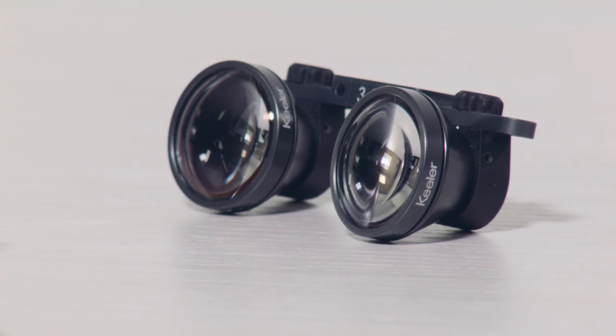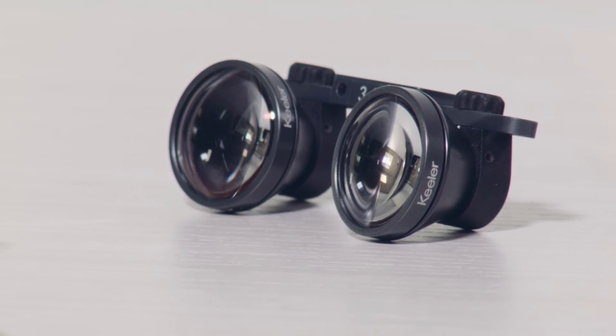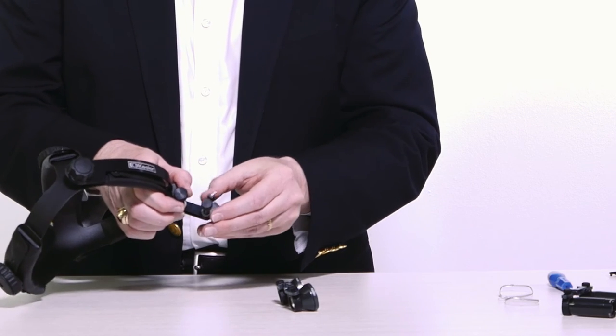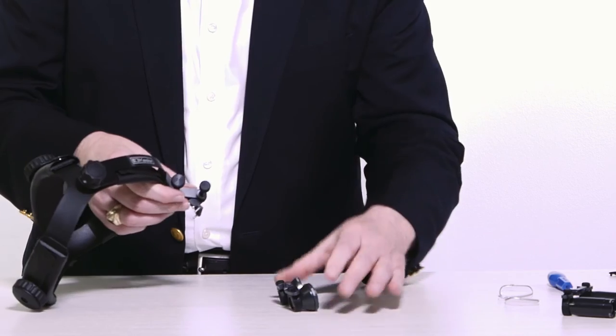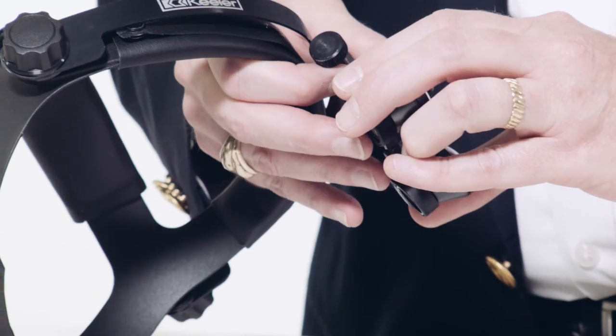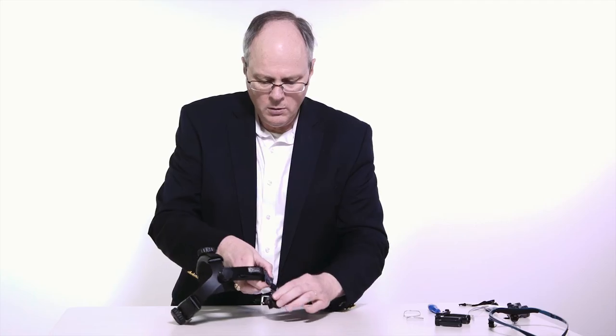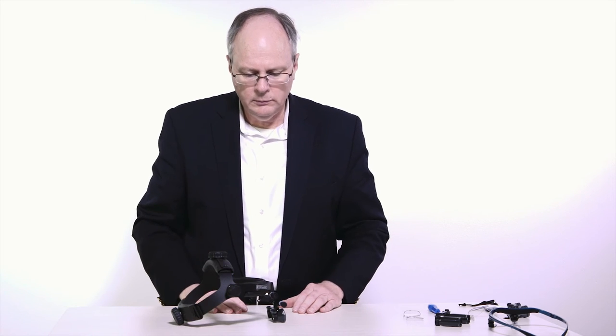The magnification and working distance of the loops is marked on the loop bar. Keeler loops are fit to the headband hinge by loosening the pivot mount knob and reversing the position mounting pins. Holding the loop PD bar, push them onto the pins as shown.